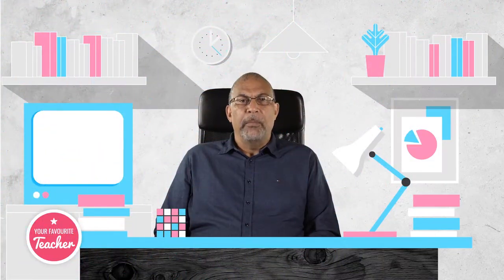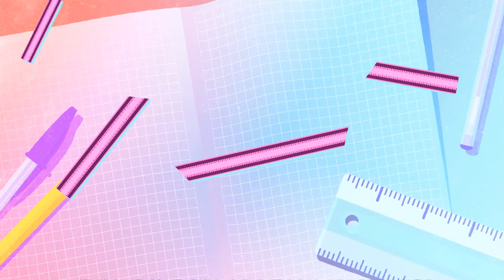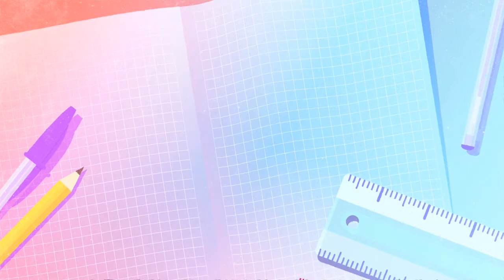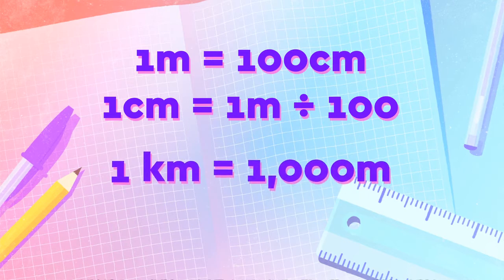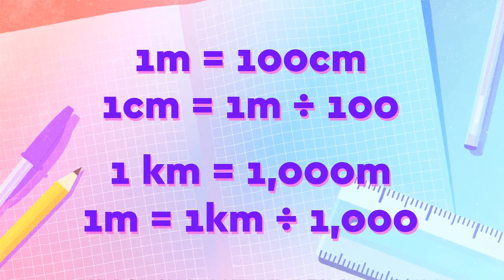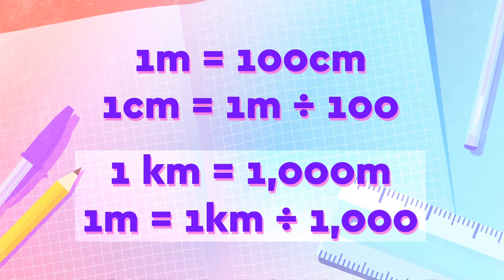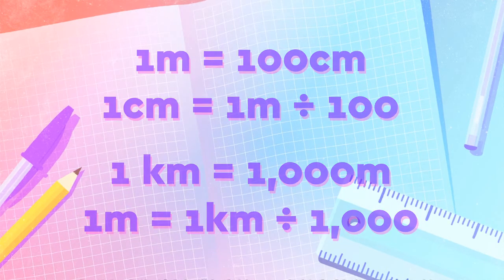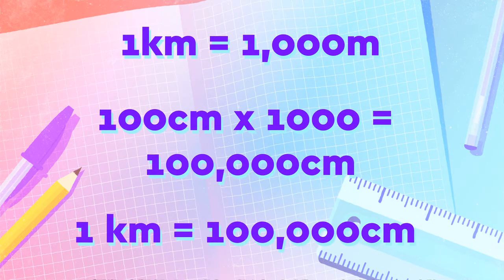As we know, metric units of length are based on a meter base, whether fractions or multiples of a meter. We can therefore link the different units together by powers of 10, depending on which units we are comparing. As an example, a centimeter is one hundredth of a meter, and a kilometer is one thousand meters, so there are one hundred thousand centimeters in a kilometer.